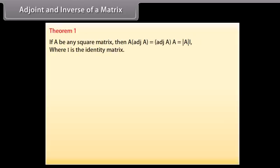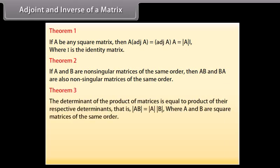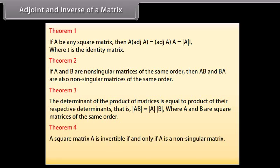Theorems on adjoint and inverse: Theorem 1 — if A is any square matrix, then A times adj(A) equals adj(A) times A equals det(A) times I, where I is the identity matrix. Theorem 2 — if A and B are non-singular matrices of the same order, then AB and BA are also non-singular matrices of the same order. Theorem 3 — the determinant of the product of matrices equals the product of their respective determinants: det(AB) equals det(A) times det(B). Theorem 4 — a square matrix A is invertible if and only if A is non-singular; inverse of A equals 1 divided by det(A) times adj(A).